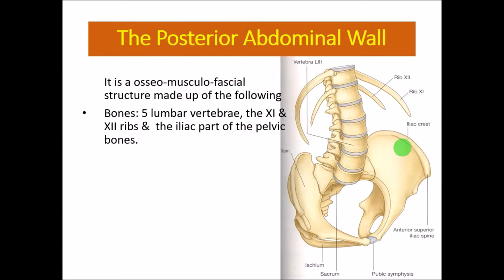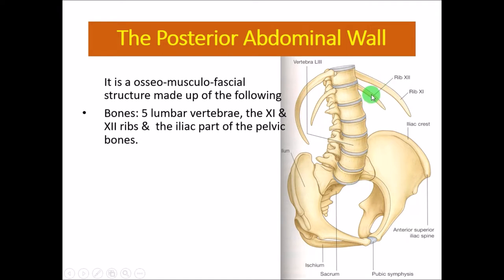The bony structures are the five lumbar vertebrae — first, second, third, fourth, and fifth. You can identify the lumbar vertebrae separated from the thoracic by the presence of the ribs. Then the 11th and 12th ribs, shown here on either side.